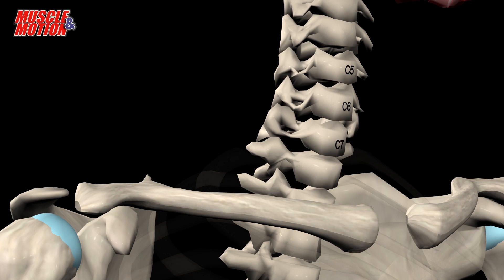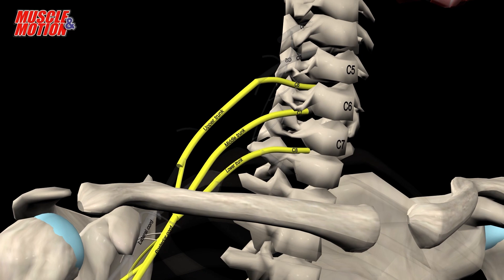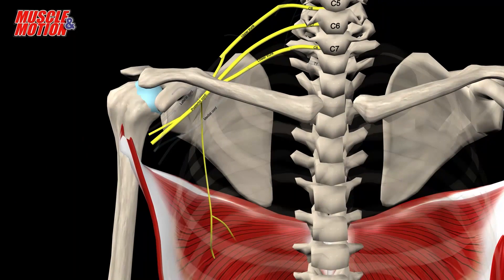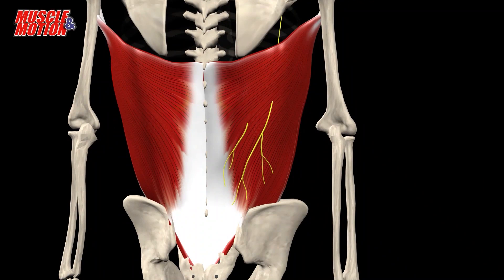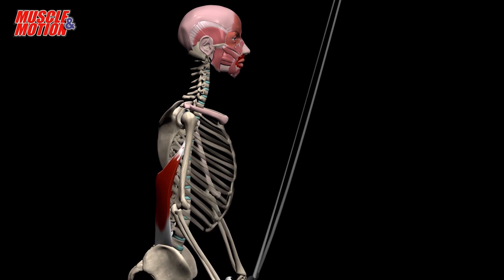Its innervation comes from the thoracodorsal nerve, C6 through C8. The actions of the muscle include shoulder joint extension.